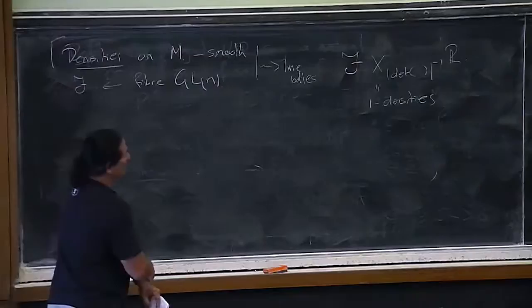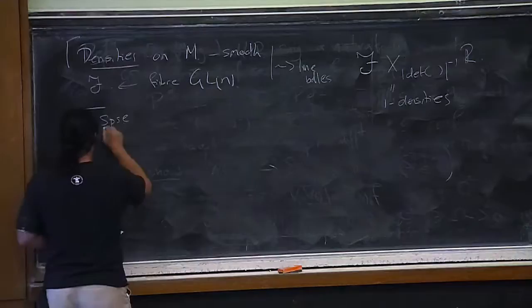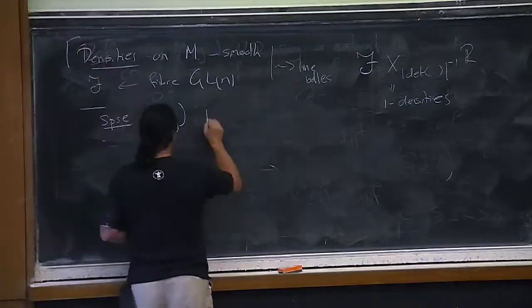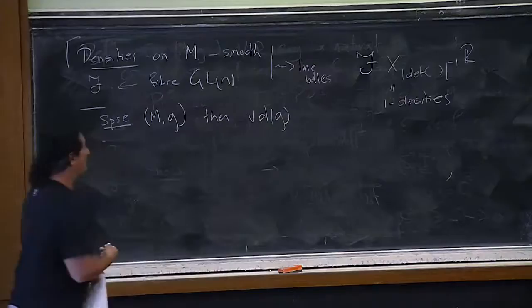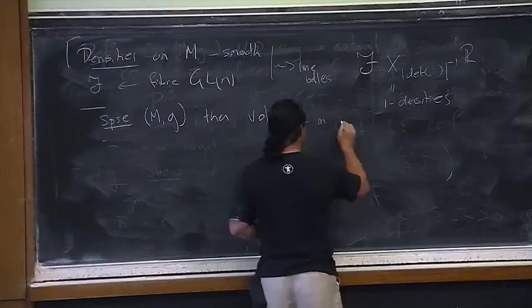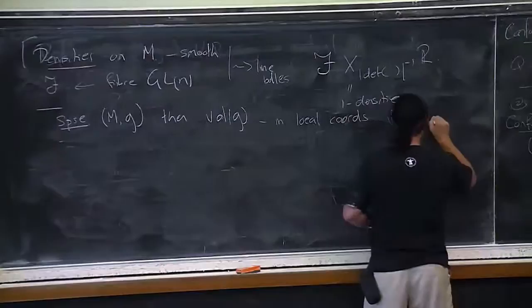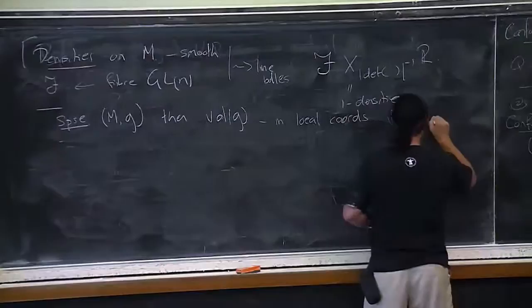Densities on a smooth manifold M: on a smooth manifold with no metric or conformal structure, we have the frame bundle with fiber GL_N. From every representation of the frame bundle you can form an associated bundle, and in particular we can form line bundles using the representation that takes the determinant of an element of GL_N and takes its inverse as a multiplication operator on R. That's a perfectly good representation giving a canonical line bundle on a smooth manifold called one-densities — the things you can integrate on a non-oriented manifold. If you have a metric, there's a canonical density given in local coordinates by the square root of the determinant of the components of G.